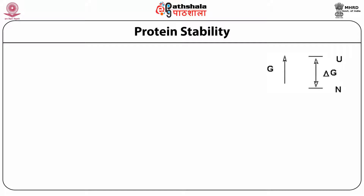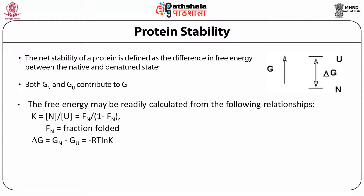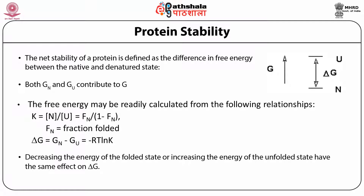The net stability of a protein is the difference in free energy between the native and denatured state. The equilibrium constant K equals the concentration of native divided by concentration of unfolded protein, or equivalently the fraction of native protein divided by one minus that fraction. Delta G equals the free energy of the native state minus the unfolded state, which equals -RT ln K. Decreasing the energy of the folded state or increasing the energy of the unfolded state have the same effect on delta G.